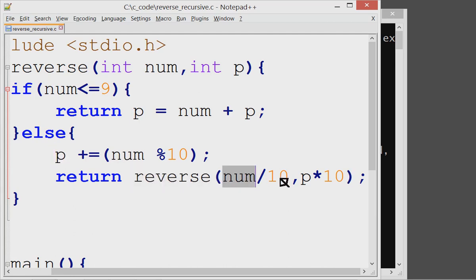And then reverse is called. Now 23 divided by 10, that is 2. And here 43 multiplied by 10, that is 430 is passed. And this reverse function is called again. Let's see what happens inside this.